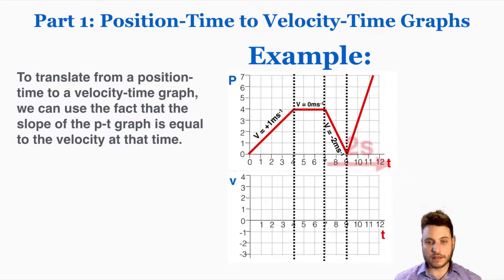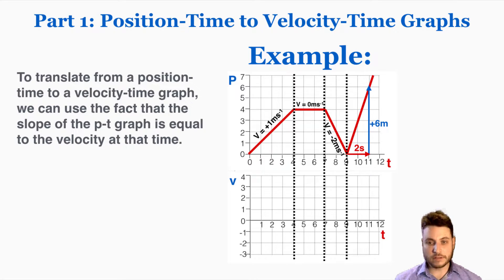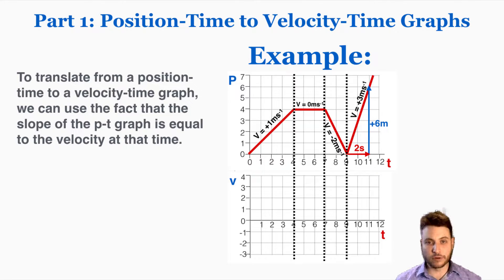In the last section, the run is 2 seconds and the rise is 6 meters. As long as we can get some slope from the line, that same slope continues for the rest of the section. So it's 6 meters over 2 seconds, which equals 3 meters per second. Within each section the velocity stays constant — the slopes don't get steeper or shallower. They only change when moving from one section to the next.